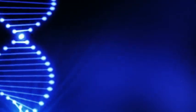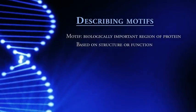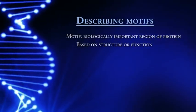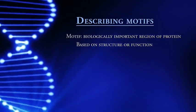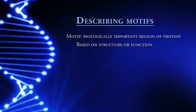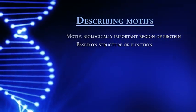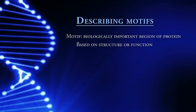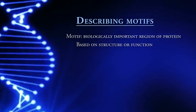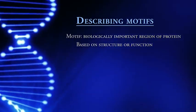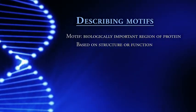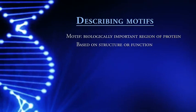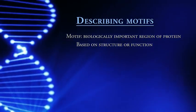First, let's look at some basic definitions. We will call a motif a biologically important region of a protein — basically, a particular type of structure or a particular type of function. So something that is biologically relevant within a protein.